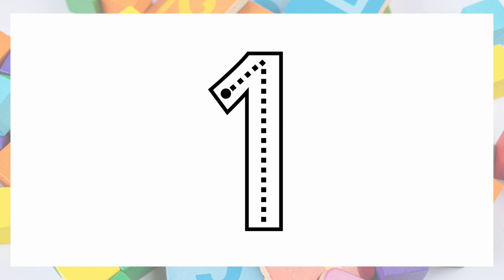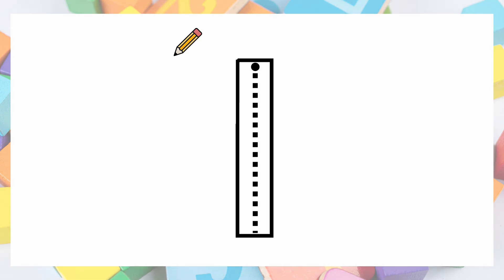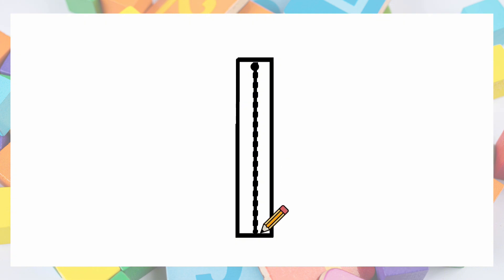Well done identifying number one in different ways! Now let's look at how to write the number one. You start from the top, take it up and down to make a stroke. Let's look at another way to write the number one — start from the top and take it all the way down. Good job writing number one!